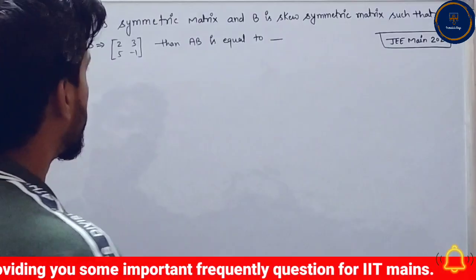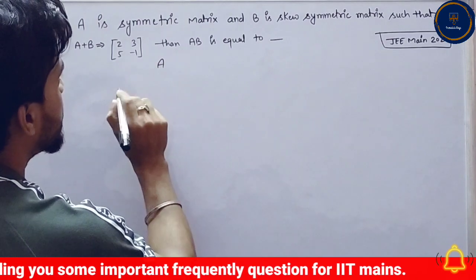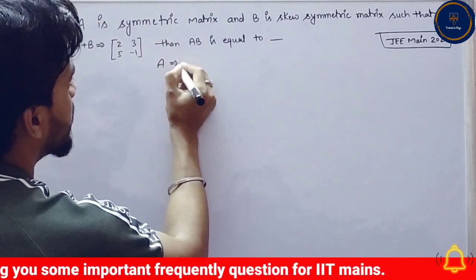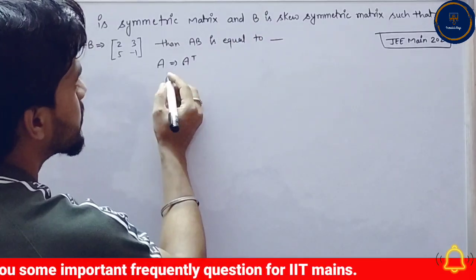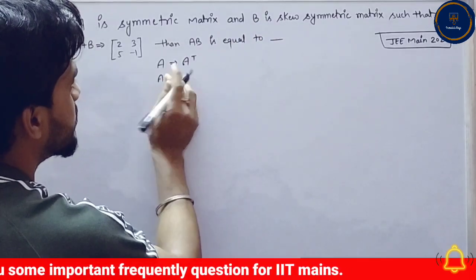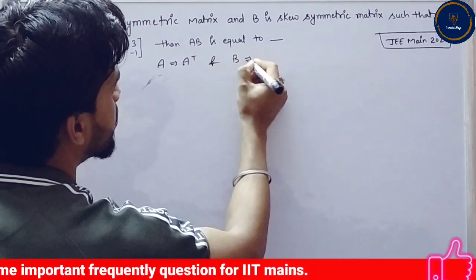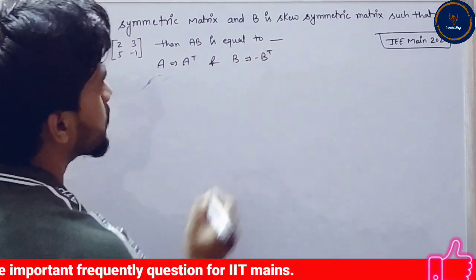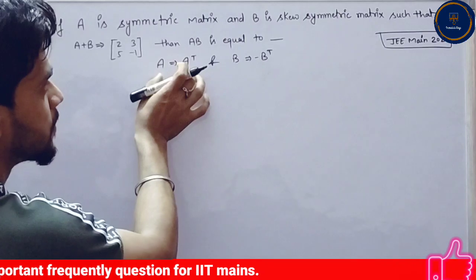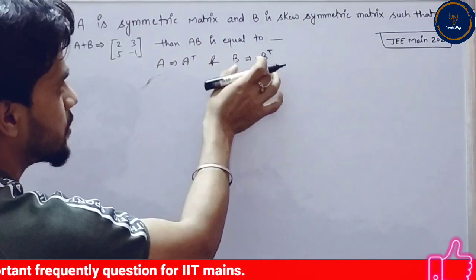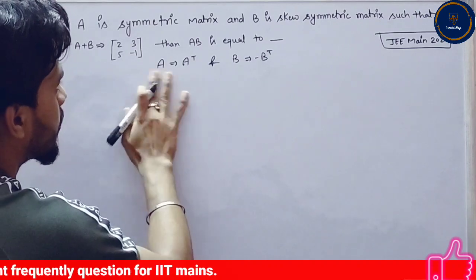So we have to use this approach. A is symmetric, that means A is equal to A transpose, and B is skew symmetric, that means B is equal to minus B transpose. This is a property of skew matrix and symmetric matrix.